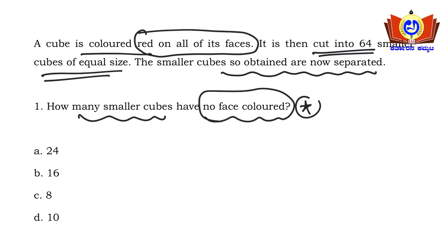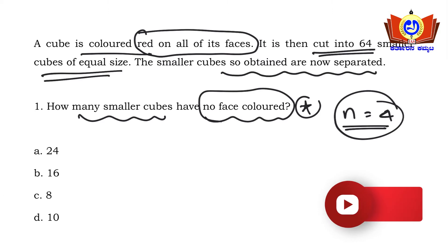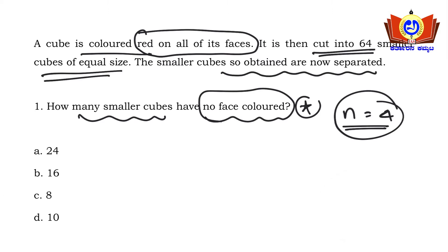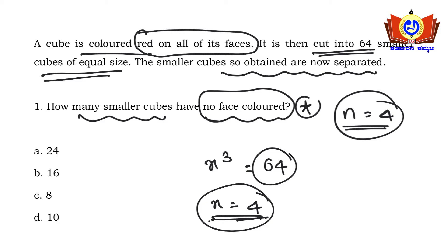This question can be solved in two ways: a formula method and imagination. You can imagine a cube cut into 64 pieces — obviously n will be 4, meaning the bigger cube is of 4 centimeter length. Each smaller cube will be 1 centimeter. If you find it difficult to imagine, you can apply the formula: x³ equals total number of smaller cubes, so x equals 4.